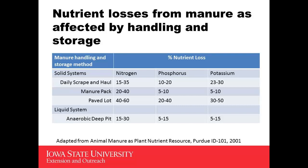This slide comes from some data out of Purdue, just to give you an idea of potential nutrient losses between different systems that also affect our manure concentrations. From solid systems — daily scrape and haul, manure pack, and paved lot — you can see how N, P, and K losses change between those three systems. I also included a liquid system, referencing the deep pits Chris mentioned earlier. These numbers change from farm to farm; these are just averages, and this data was published over 12 years ago, so we look at them as guidelines.